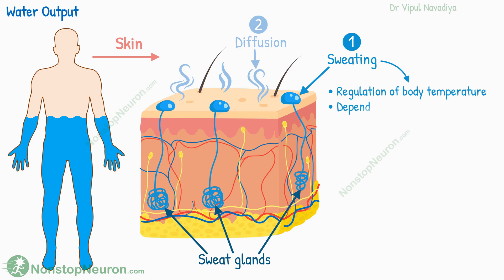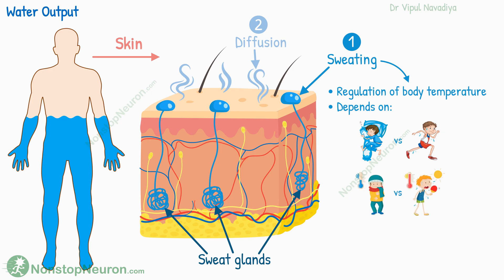The amount lost through sweating depends on physical activity, atmospheric temperature, and humidity. Normally it's about 100 milliliters per day, but it can increase up to 2 liters per hour in hot weather or during heavy exercise.